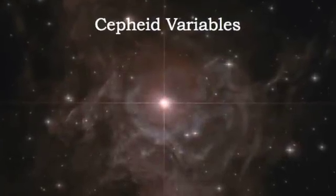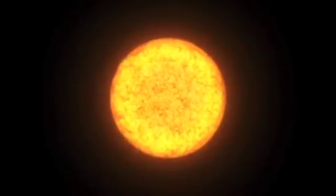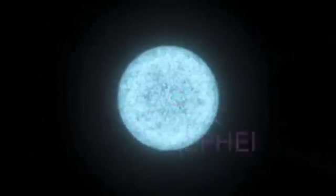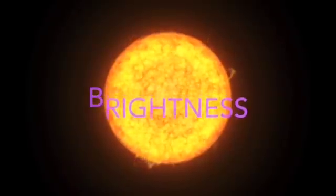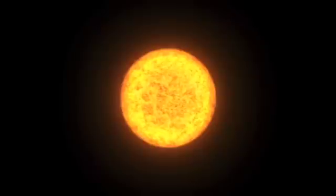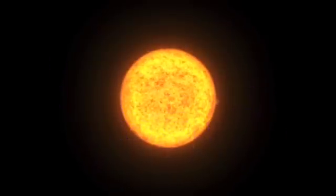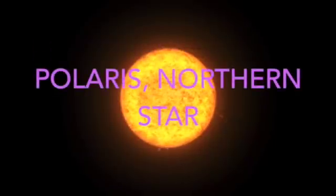Cepheid variables. Cepheid variable stars are named after the fourth brightest star in the Cepheid constellation, delta Cepheid. The Cepheid variable's period, how often it pulsates, is directly related to its brightness or luminosity. These stars are also used as standard candles because they pulsate in a predictable way. The fluctuation periods can be large like in delta Cepheid or small as in the case of Polaris, our northern star.